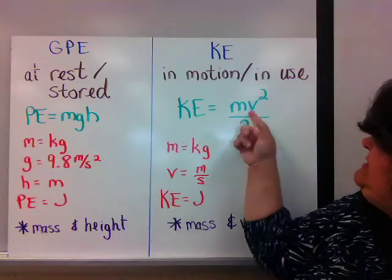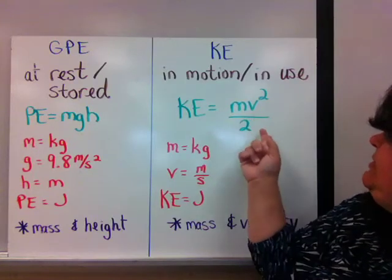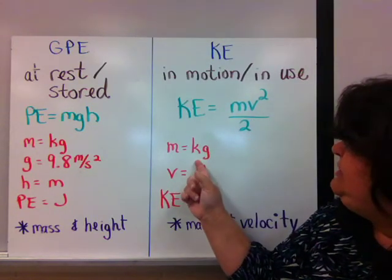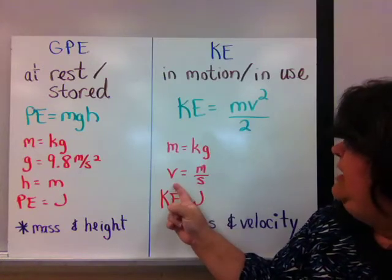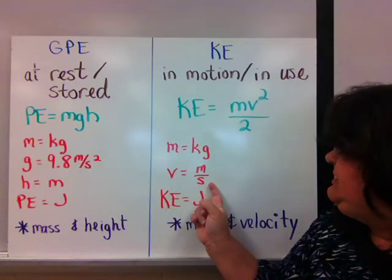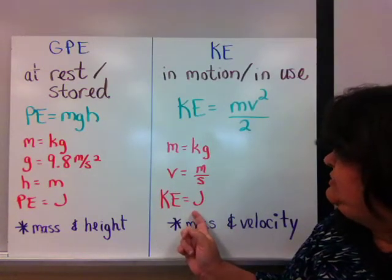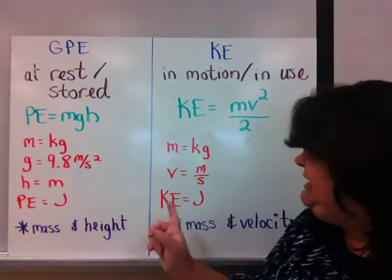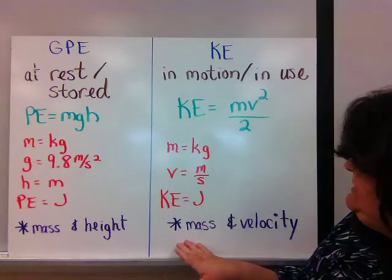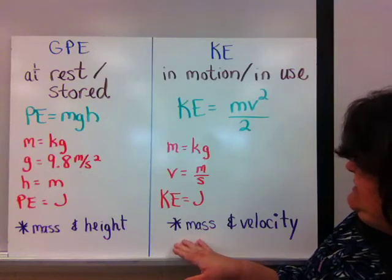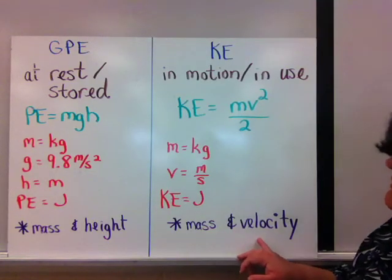Kinetic energy is mass times velocity squared over 2. The mass is still going to be measured in kilograms. The velocity will be in meters per second. And kinetic energy, just like potential energy, is in joules. But the difference is that kinetic energy is dependent on mass and velocity.